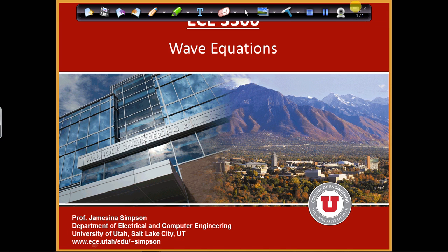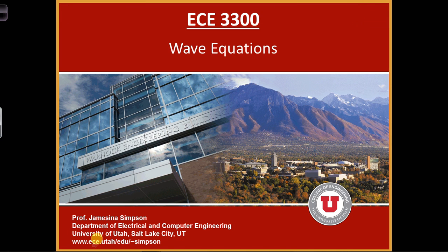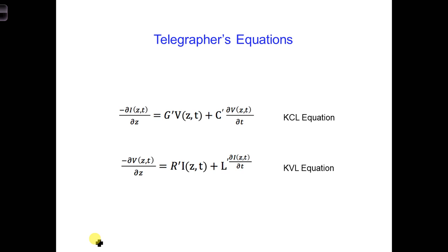On this first slide are the two telegrapher's equations that we saw last time. We want to use these two equations to study the voltages and currents along a transmission line, like the one going from the cockpit to the fuel tank in a 747 airplane.